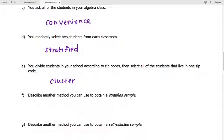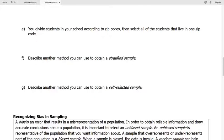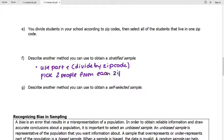And then we've got the last couple of questions here. So question F asks us this. We want to determine or describe another way that we can use to obtain a stratified sample. So stratified sample, again, it's where we divide our population into groups, and then we take random samples from each group. So one way we could do this is use part E, divide into zip code, but instead of taking only one zip code, pick two people from each zip code instead.